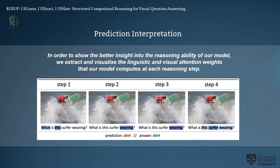To show better insight into the reasoning ability of our model, we extract and visualize the linguistic and visual attention weights that our model computes at each reasoning step. At the first reasoning step, the model focuses on objects like man's hand and head. During the second and third steps, linguistic attention focuses on 'wearing' and visual attention is heavily on the man's shirts and pants. Our model successfully captures the most important semantic words from questions and detects relevant objects from the image for answer prediction.